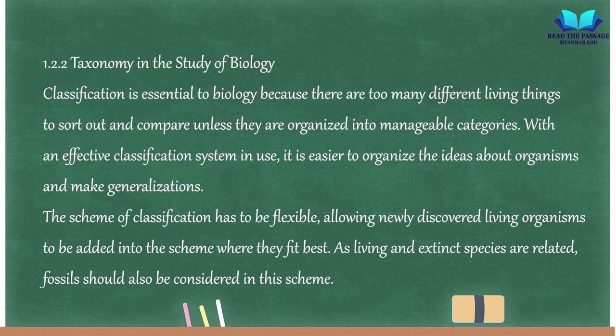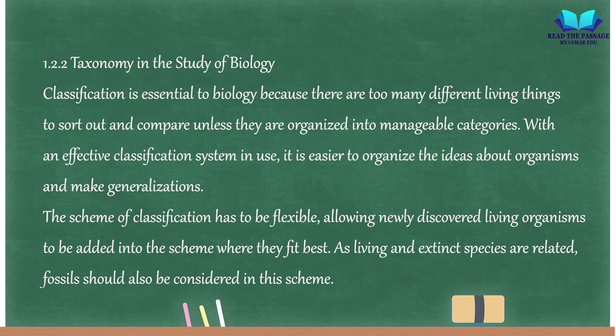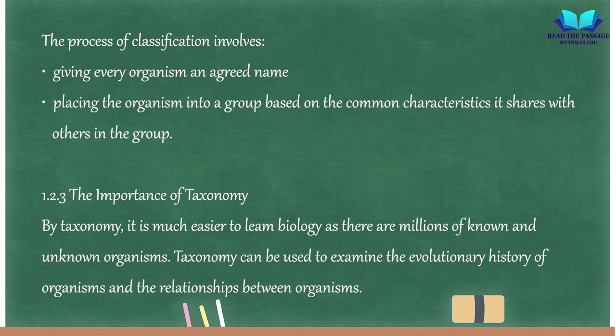1.2.2 Taxonomy in the Study of Biology. Classification is essential to biology because there are too many different living things to sort out and compare unless they are organized into manageable categories. With an effective classification system, it is easier to organize ideas about organisms and make generalizations. The scheme of classification must be flexible, allowing newly discovered organisms to be added where they fit best. As living and extinct species are related, fossils should also be considered. The process of classification involves giving every organism an agreed name and placing it into a group based on shared characteristics.